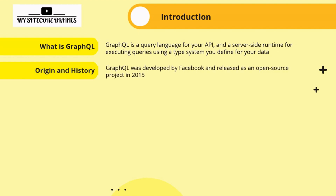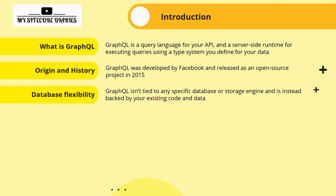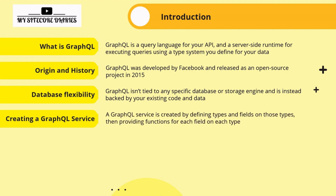Regarding origin and history: GraphQL was developed by Facebook and released as an open-source project in 2015. A key feature is database flexibility — GraphQL isn't tied to any specific database or storage engine; instead it works seamlessly with your existing code and data. A GraphQL service is created by defining types and fields on those types, then providing functions for each field on each type.